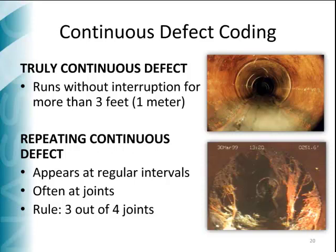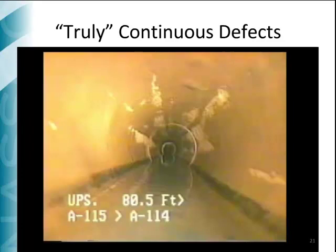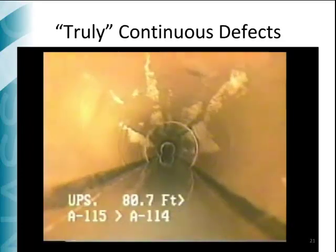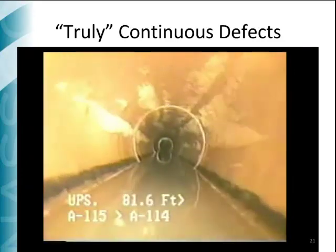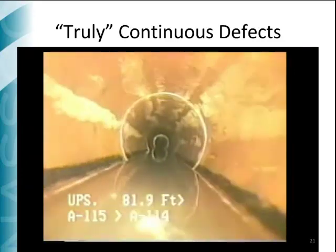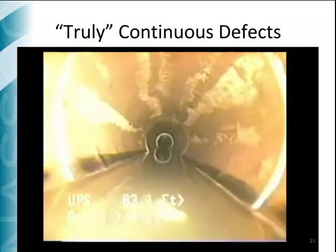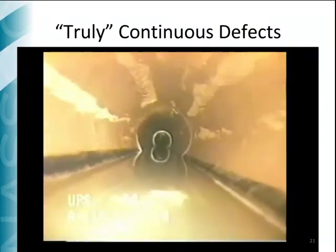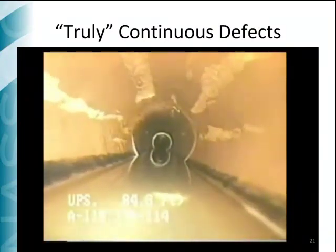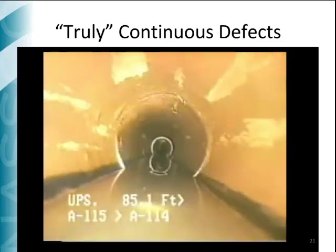Let's see some examples of how these two defects look in a real scenario. The following video shows residues of grease attached to the pipe wall after the pipe has been cleaned with jetting equipment. Note that more than 3 feet of the pipe is affected and therefore this is a truly continuous defect.